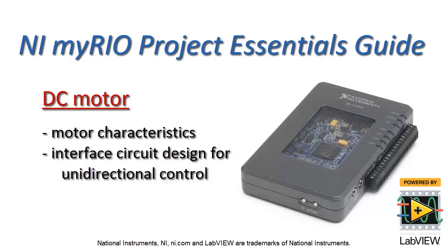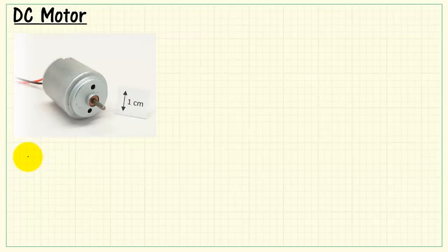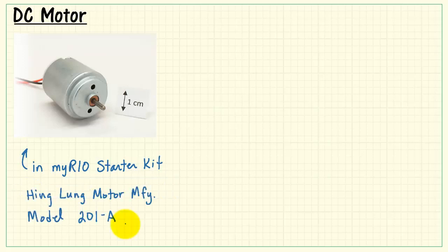Let's take a look at the DC motor characteristics and also the interface circuit design for unidirectional control. This is the DC motor that's included in the MyRio starter kit.